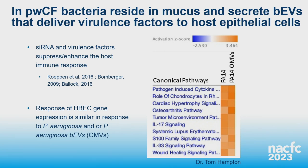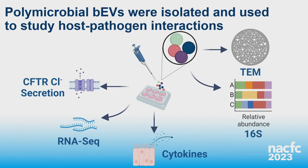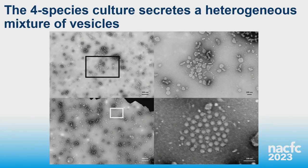Furthermore, BEVs have a similar effect on HBECs as whole bacteria — preliminary RNA-seq analysis from our lab indicates no significant differences in immune pathway activation in HBECs treated with either Pseudomonas aeruginosa whole bacteria or OMVs. This is particularly advantageous for our in vitro infection environment, since anoxia damages HBECs and bacteria rapidly change transcription when exposed to oxygen. BEVs provide an in vitro model to study infection without worrying about rapid transcriptional changes in live bacteria.